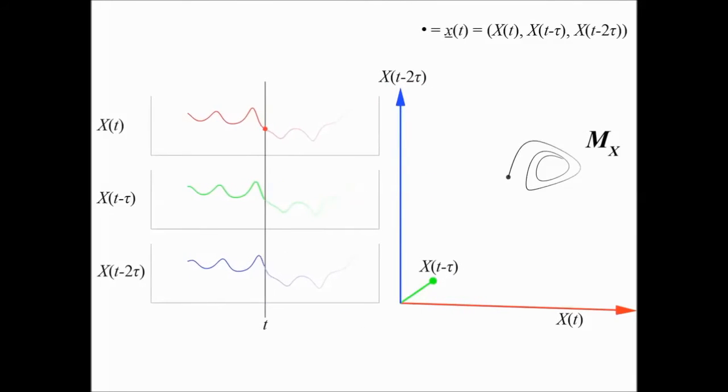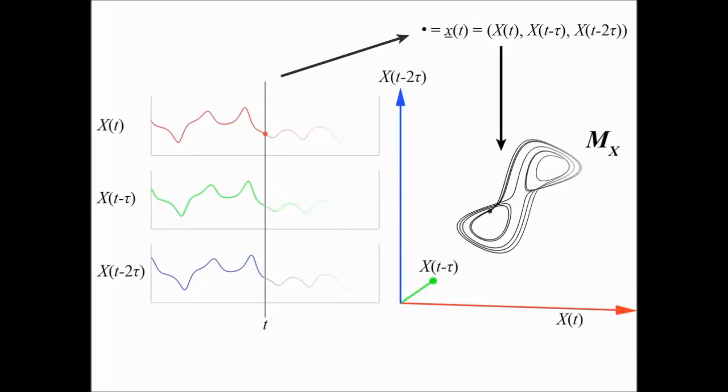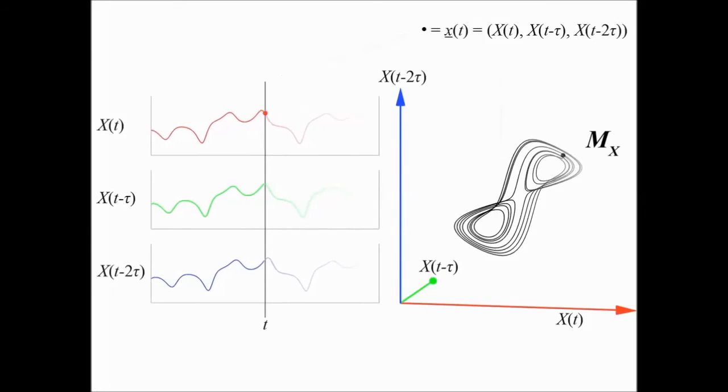This is the reconstructed manifold produced from lags of a single variable, and you can see that it actually does look fairly similar to the butterfly attractor. Each point in the three-dimensional reconstruction can be thought of as a time segment with different points capturing different segments of history of variable x, and the reconstructed manifold is then a library or collection of the historical behavior of x.